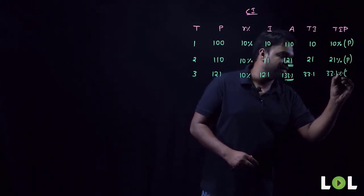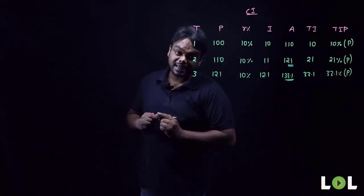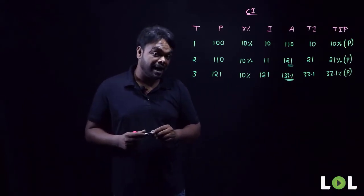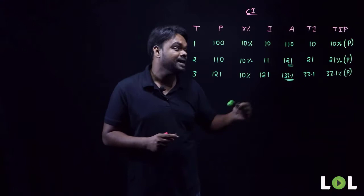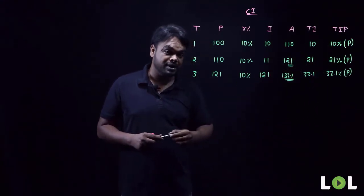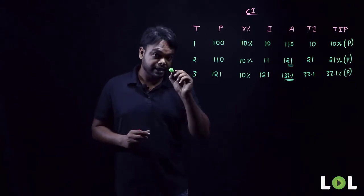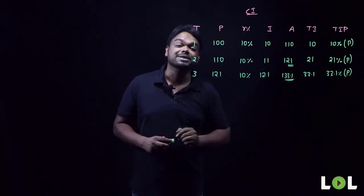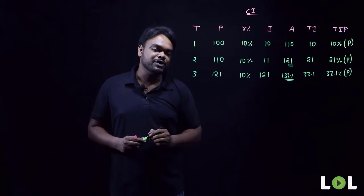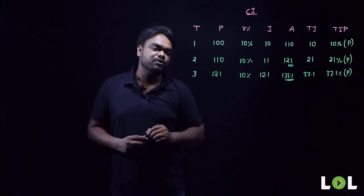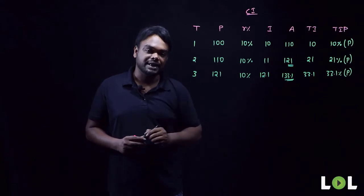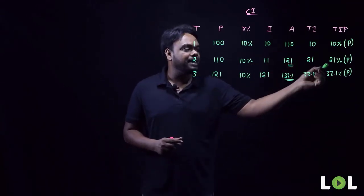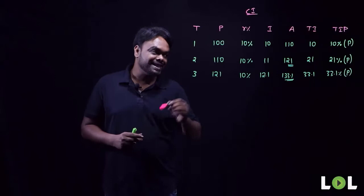In simple interest we directly get 10 percent, 20 percent, 30 percent, 40 percent and so on, whereas in compound interest we get a different total interest percentage: 10 percent, 21 percent, and 33.1 percent. This is because we apply interest on the interest of the previous year. In simple interest we calculated TIP with the formula r × t, or interest divided by principal × 100. But how do we calculate TIP directly in compound interest?